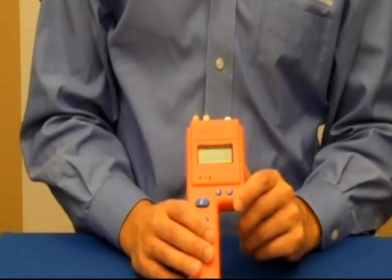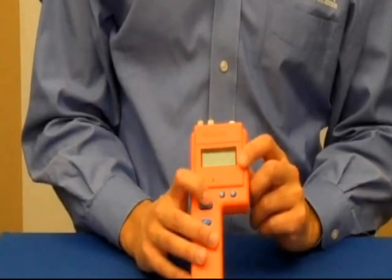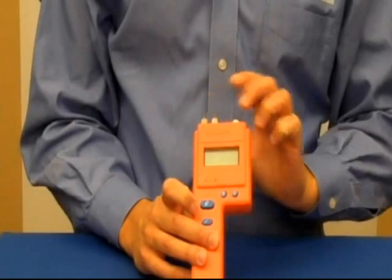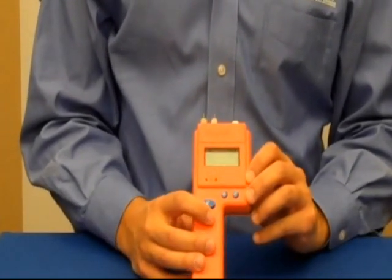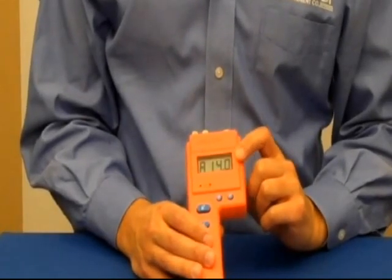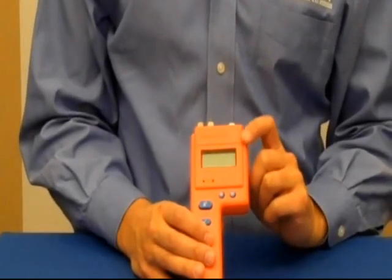The last feature that the BD2100 offers is limited storage capability. Every time you take a reading by pressing the read button and releasing it, it stores that reading into memory. And then you can press the check button to see how many readings have been stored.